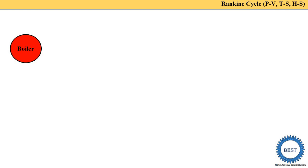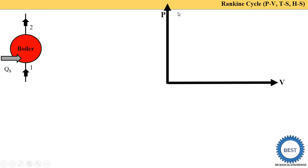First, we understand which process is carried out in the boiler. In the boiler, an isobaric heat supply process is carried out, meaning heat is supplied to the water at constant pressure, and water is converted into steam. This one-to-two process is the isobaric heat supply process.